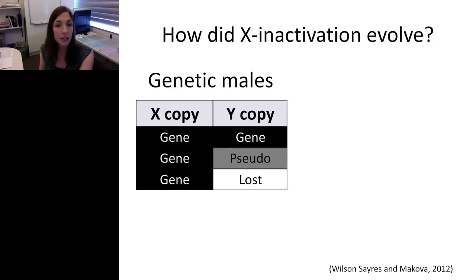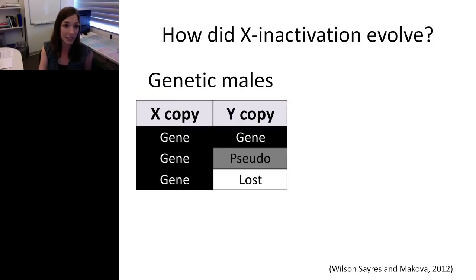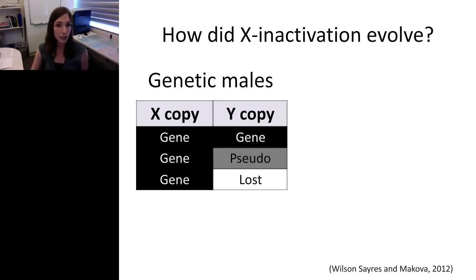The second category are X-linked genes that have a functional copy on the X chromosome but a pseudogenized — non-functional — copy on the Y chromosome. We can still identify sequence on the Y chromosome even though we don't think it is functional. The third category are X-linked genes that have no evidence of a Y-linked copy at all, but comparative genomics confirms these existed on the ancestral X and Y chromosome — they've been completely lost from the Y, suggesting they were lost quite a long time ago, whereas genes with a pseudogenized copy were likely lost more recently.